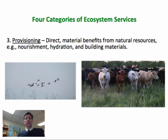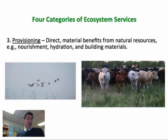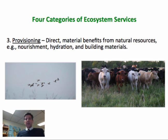Next would be those ecosystem services that we can most directly relate to as things we use, and we call those provisioning ecosystem services. It could be grass that we manage to feed our livestock, and then we have the ability to eat those livestock to drive nourishment from them. It might be the clean water that we take for granted so often that we get to drink and put on our crops. These are provisioning ecosystem services — the ability of ecosystems to give us food, water, and clean air.